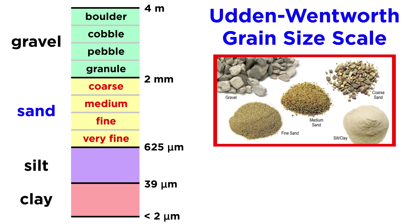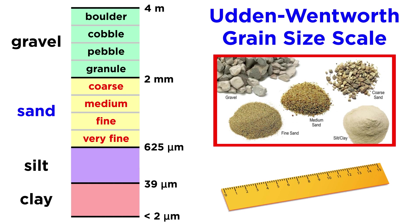Sand is then further divided into very fine, fine, medium, and coarse. Since fine sand and coarse sand are deposited in very different environments, having an accurate measurement of a sand's grain size is extremely valuable to a geologist.